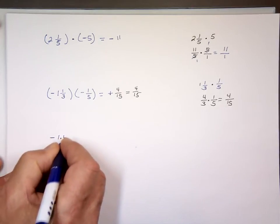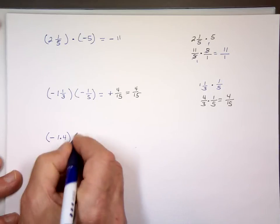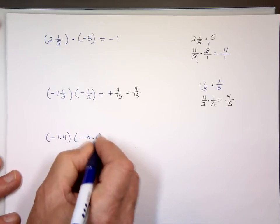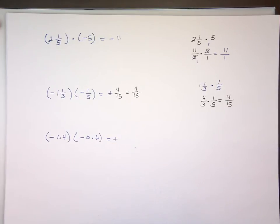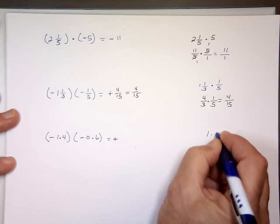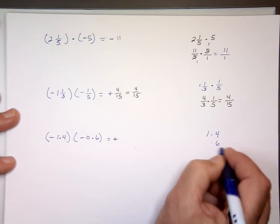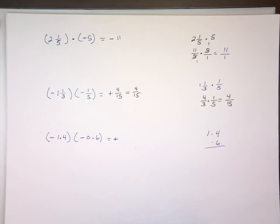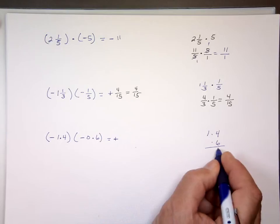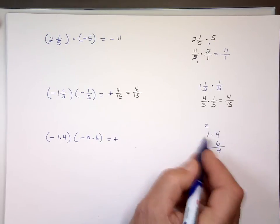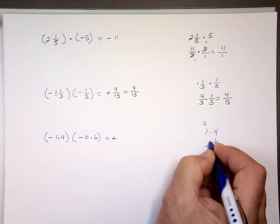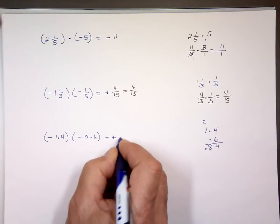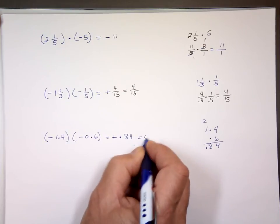Negative one point four times negative point six. Positive or negative? Positive — same signs. So let's go to the side: one point four times point six. Multiply the numbers as if you don't see the decimal points. Six times four is twenty-four. Six times one is six, carry the two — that's eight. Now move the decimal point two places: that's point eight four, or zero point eight four.